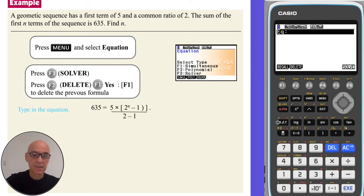So if we start by typing 635. And then shift to get to the equals. And then a fraction button. And then we can do the numerator. So 5 multiplied by bracket. 2 to the power of, we use x for the variable over here. And then right cursor to come down again. Take away 1.